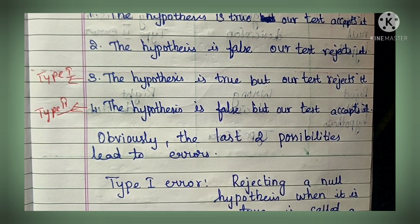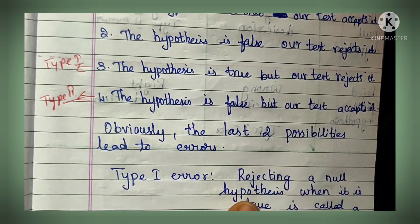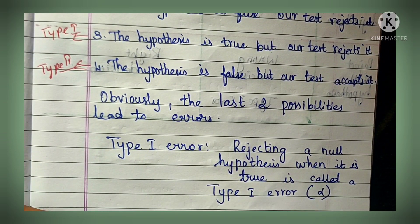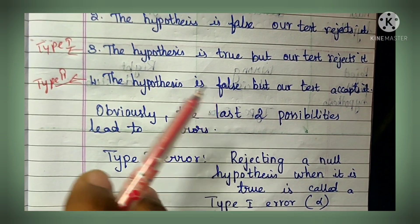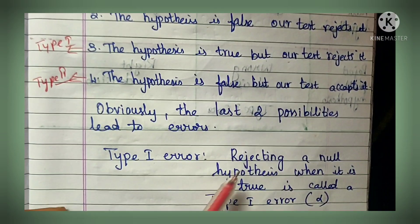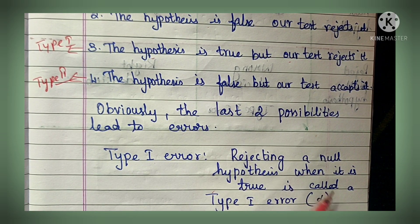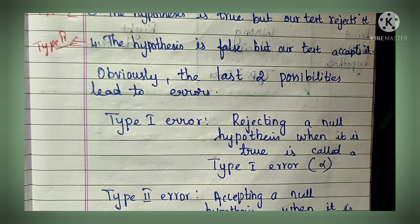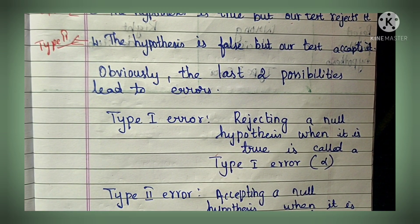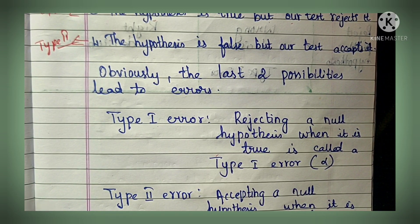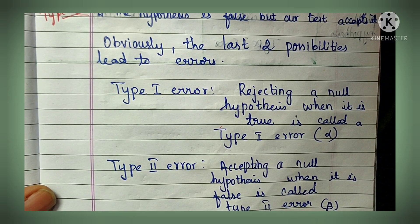Type 1 error: rejecting a null hypothesis when it is true is called type 1 error, represented by the symbol alpha. Type 2 error: accepting a null hypothesis when it is false - you are accepting it instead of rejecting it - is called type 2 error, represented by the symbol beta.